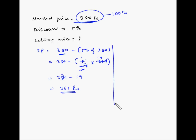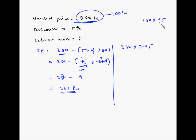So you can quickly calculate the selling price by multiplying 380 by 0.95 — that is, we are finding 95% of 380. It is 380 multiplied by 95 upon 100, which becomes 0.95. This also gives the same answer: 361 rupees.